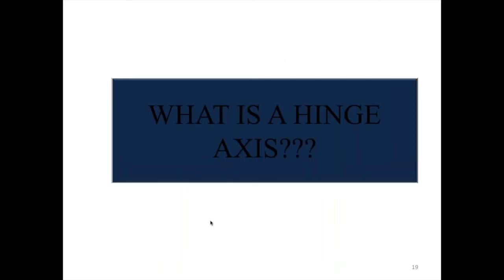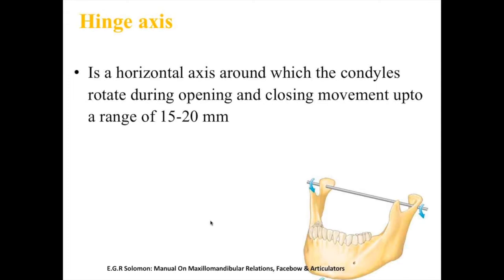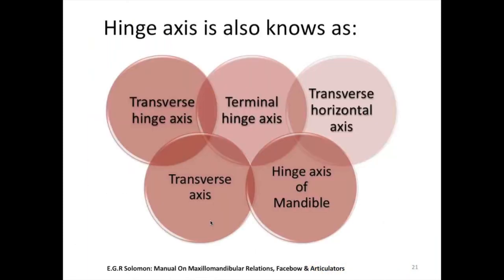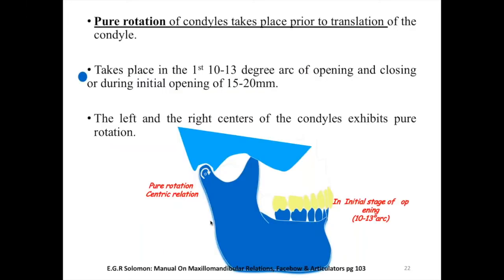The hinge axis is a horizontal axis around which the condyles rotate during opening and closing movement, up to a range of 15 to 20 mm. According to GPT-9, it is an imaginary line passing through the centers of the condyles when the mandible rotates in the sagittal plane. It is also known as the transverse hinge axis, terminal hinge axis, transverse horizontal axis, and hinge axis of mandible. Pure rotation of the condyle takes place prior to translation, occurring in the first 10 to 13 degrees of opening, and the left and right centers of the condyle exhibit pure rotational movements.